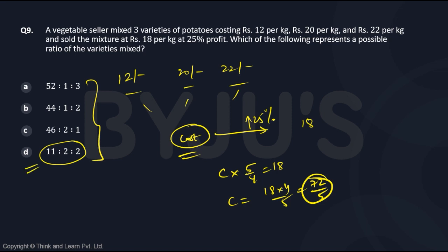You will unfortunately have to check for each option to take a little bit of time. But I am doing the calculation directly for D because that is the correct answer. You can see that 12 into 11 plus 20 into 2 plus 22 into 2 divided by these are the weights. So sum of all of them 11 plus 2 plus 2 is 15. This if you simplify, this will be 132 plus 40 plus 44 by 15.